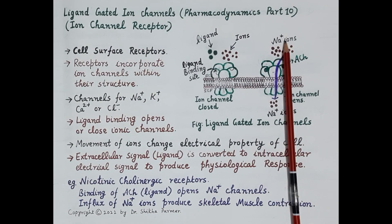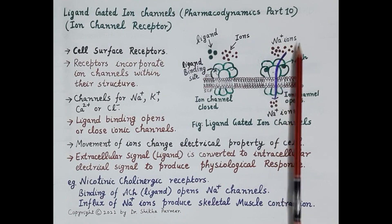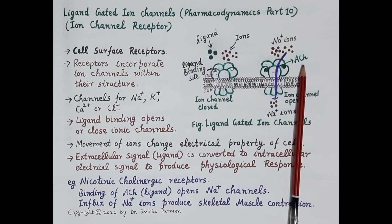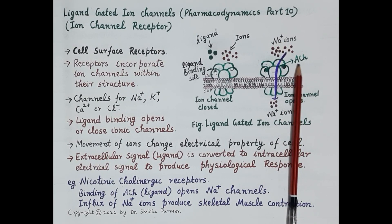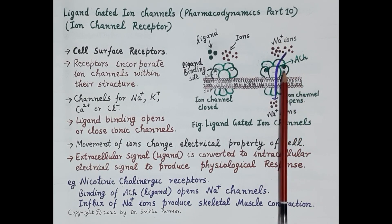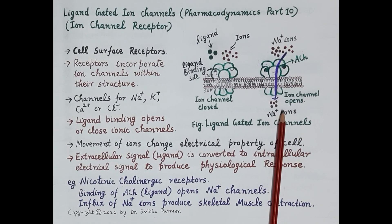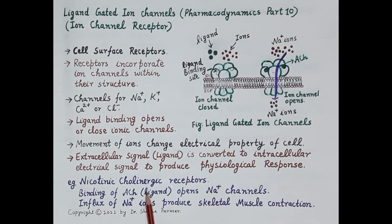Since the ions possess electrical charge, this changes the electrical property of the cell. Thus, the extracellular signal induced by the binding of ligand to the receptor is converted to an intracellular electrical signal, which produces the physiological response.